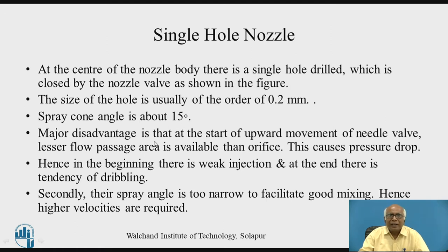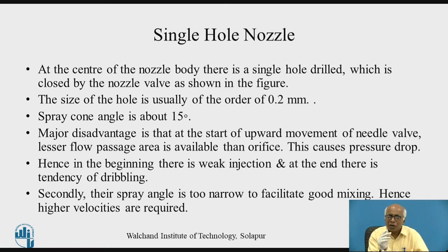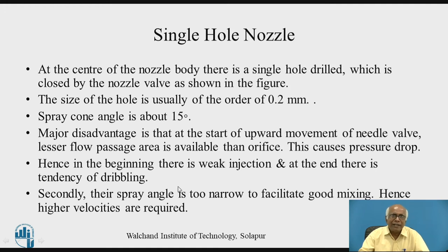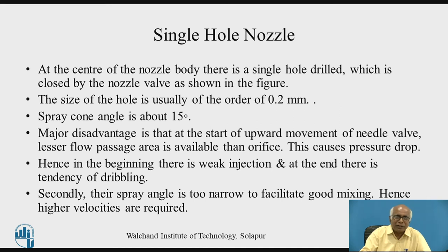A major disadvantage is that at the start of the upward movement of the needle valve, a lesser flow passage area is available than the orifice area, because of the conical taper. Only a small area is open initially, which causes a pressure drop. Hence, in the beginning there is weak injection, and at the end there is a tendency of dribbling due to low pressure. A second drawback is that the spray angle of 15 degrees is too narrow to facilitate good mixing, so higher velocities of air are required for proper distribution.